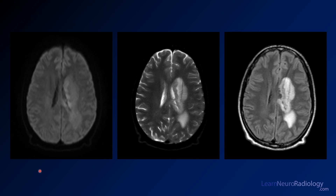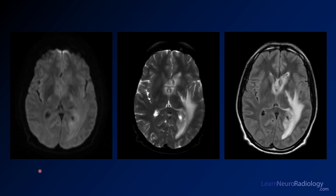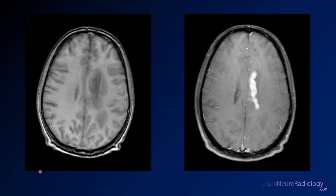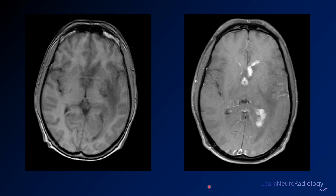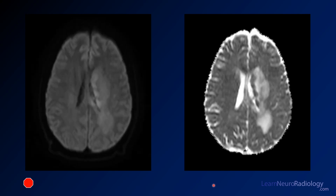Here we have a few axial images from an MRI of the brain, and now the same images from a little bit lower. Here's a magnified T1 pre-contrast and post-contrast images, and again going a little bit lower to that same level — pre and post-contrast again. Here I've just placed your DWI against your ADC for that higher level.